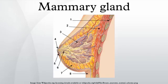Humans normally have two complex mammary glands, one in each breast, and each complex mammary gland consists of 10 to 20 simple glands. The presence of more than two nipples is known as polythelia, and the presence of more than two complex mammary glands is polymastia.